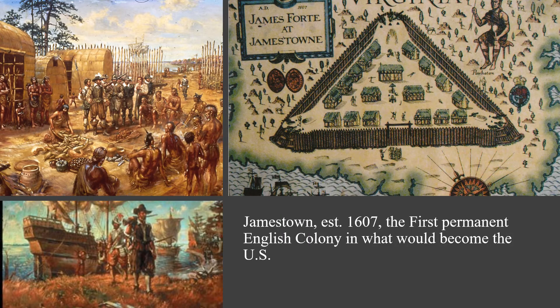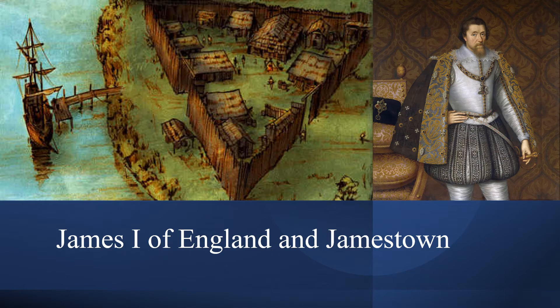The first permanent English colony in North America was established at Jamestown in May of 1607. The new colony was erected on the northern bank of the James River in the Chesapeake Bay region of what is now Virginia. The new colony was named after England's current monarch, James I, formerly James VI of Scotland. James was son of Mary Queen of Scots, who was executed by order of Queen Elizabeth. Elizabeth would not live to see a permanent English colony in North America as she died in 1603, four years before Jamestown's founding. Virginia, England's land claims on the east coast of North America, were named after the deceased Queen because she had never married.